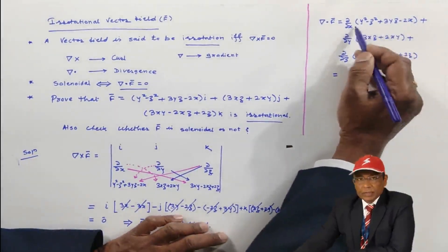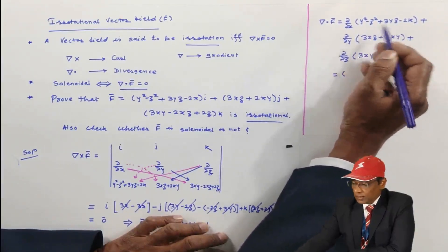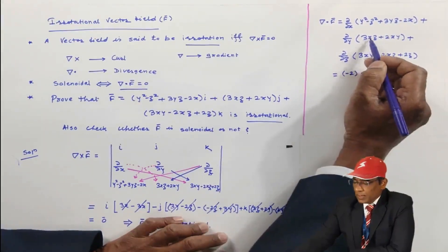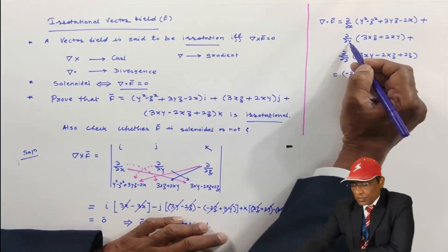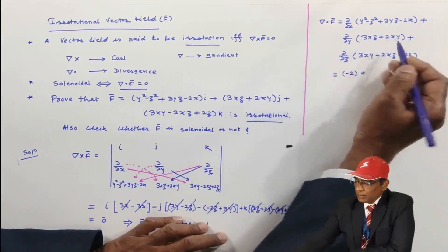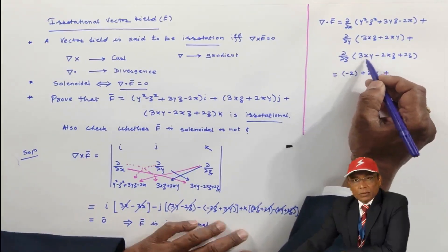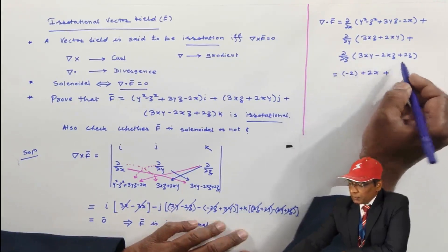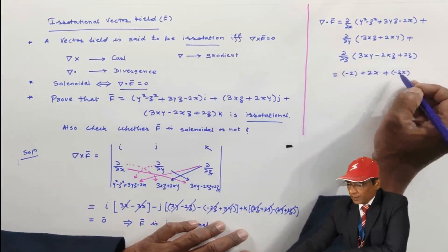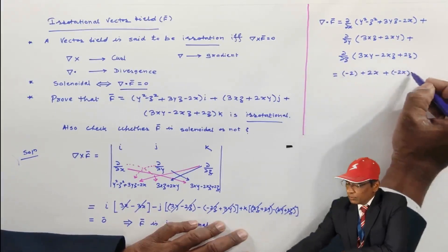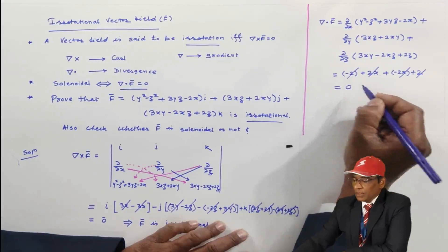Taking each partial derivative carefully: the derivative of (y² − z² + 3yz − 2x) with respect to x is −2. The derivative of (3xz + 2xy) with respect to y is 2x. The derivative of (3xy − 2xz + 2z) with respect to z is −2x + 2. Now, −2 + 2 cancels, and 2x − 2x cancels, so del dot f̄ = 0.